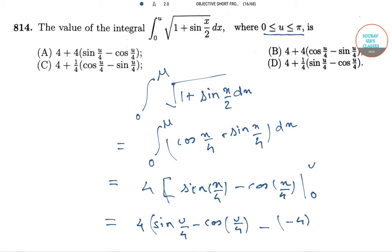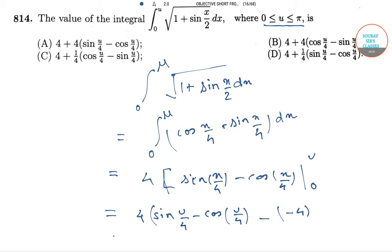So this equals 4[sin(u/4) - cos(u/4)] - [0 - 1], which equals 4 + 4sin(u/4) - 4cos(u/4), which is our option number A.